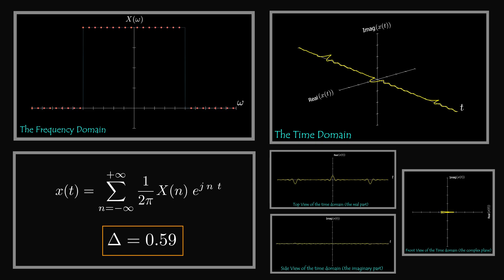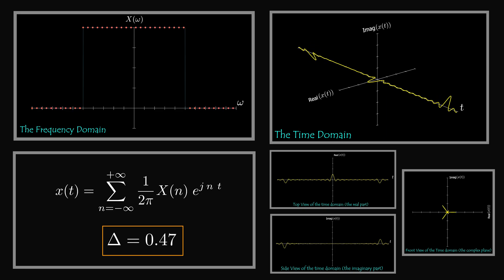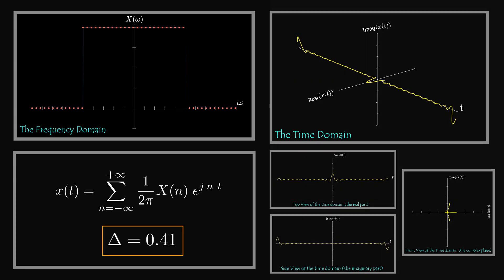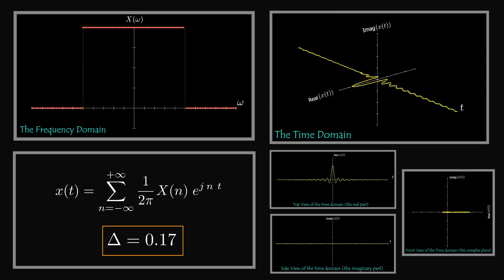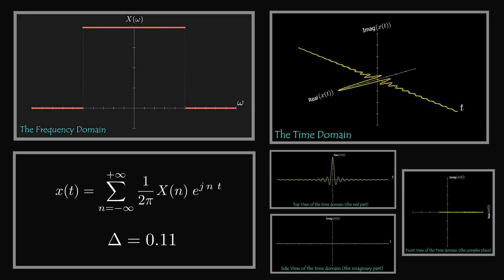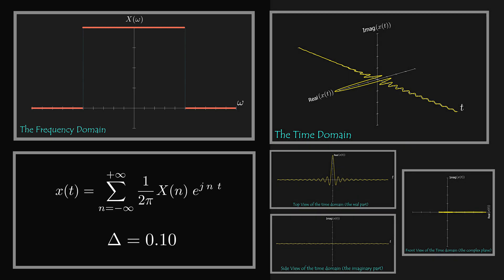Notice that the smaller the sample step size, the more components or complex exponentials need to be added up, and hence the larger the summation. The resultant becomes bigger and bigger as the number of samples increases. A continuous frequency domain signal is aperiodic in the time domain.